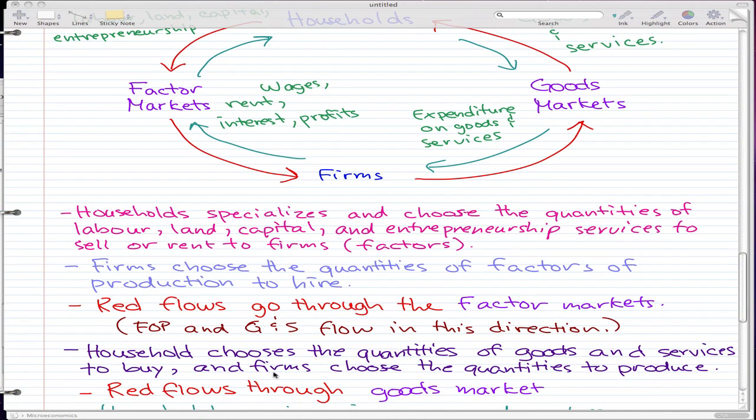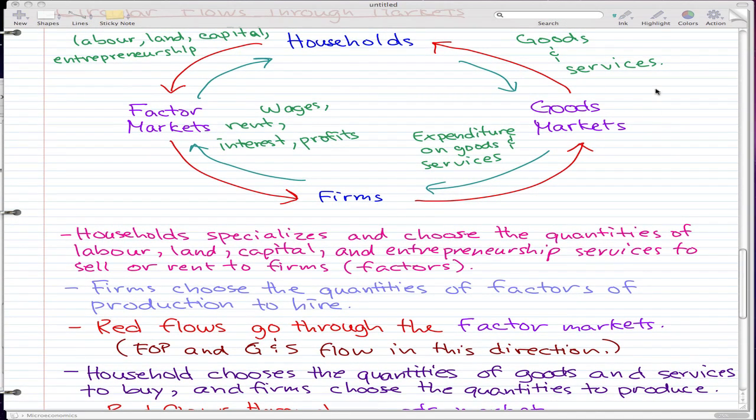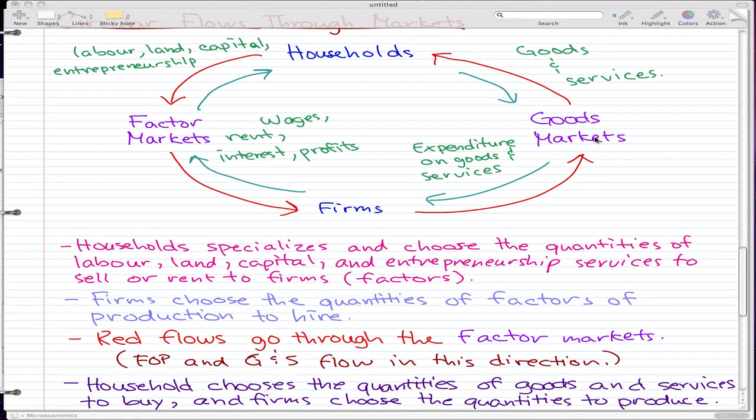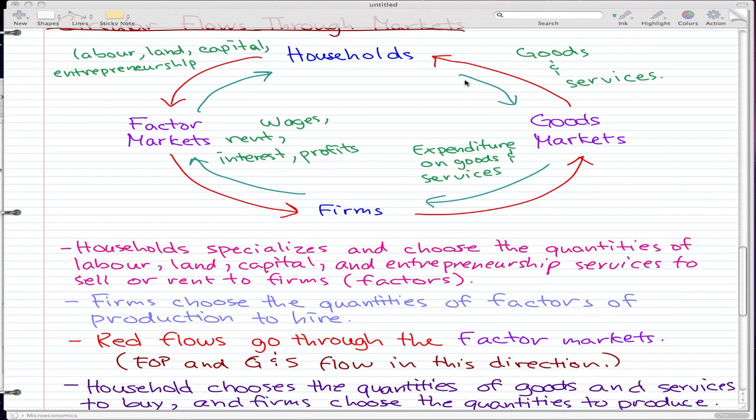And this is represented by the red flows through the goods markets. So this is the right side of the model. So the firms decide on what kind of goods and services to produce. They will put them up in the goods service, and then the households will actually get to choose what goods and services from the firms that produced it, they will buy.